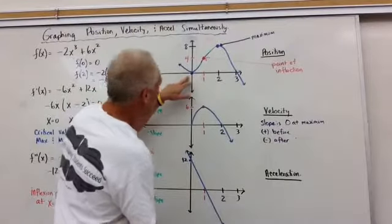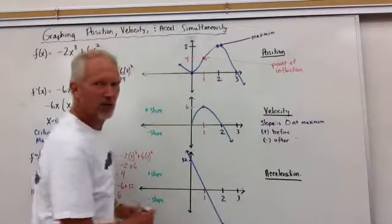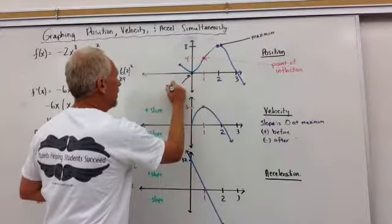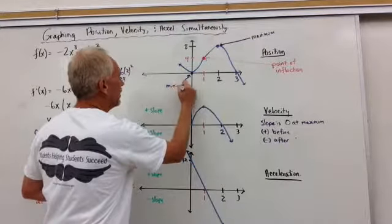and our minimum, we can show that our minimum is right here at 0, 0. So at 0, 0, we have a minimum.